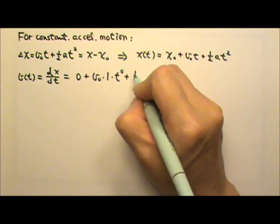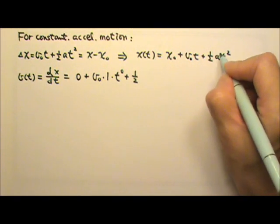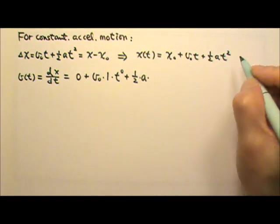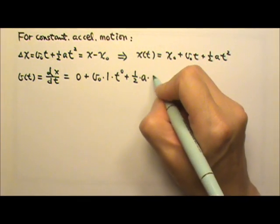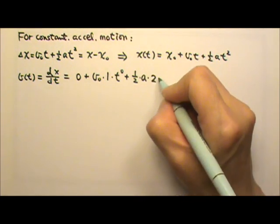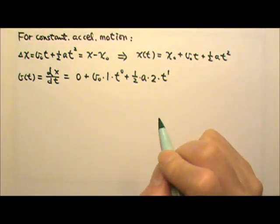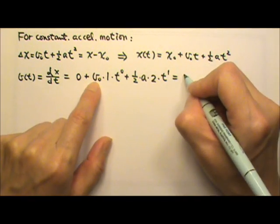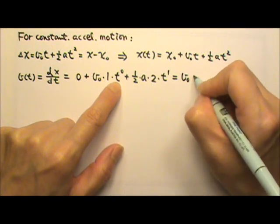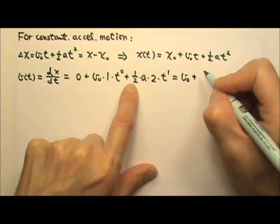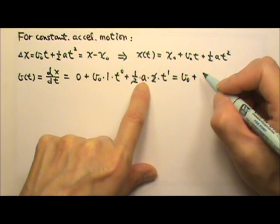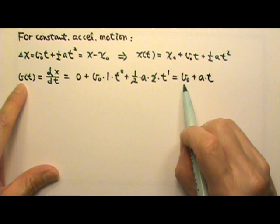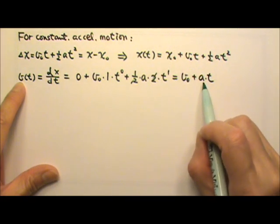The one-half is a constant, and since this is constant acceleration motion, the acceleration is also a constant. We bring down the exponent 2, then lose one degree of power to get t to the first. So v₀ times 1 gives v₀, and the one-half and the 2 cancel, leaving plus a times t. Do you remember this equation? V equals v₀ plus at.